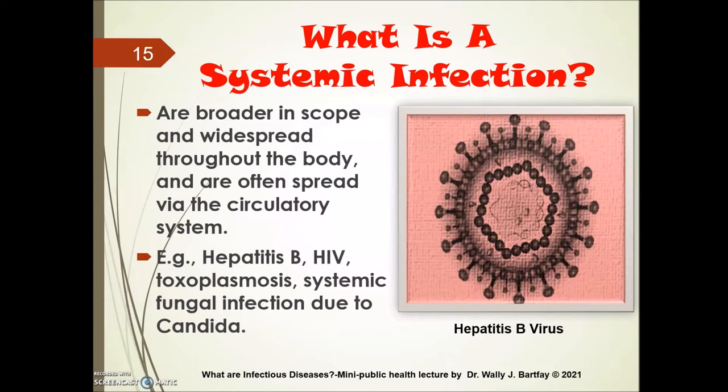Systemic infections are significantly broader in scope and widespread throughout the body, often spread via the circulatory system. Examples include hepatitis B, HIV which leads to the disease known as AIDS, toxoplasmosis, and some systemic fungal infections due to Candida.